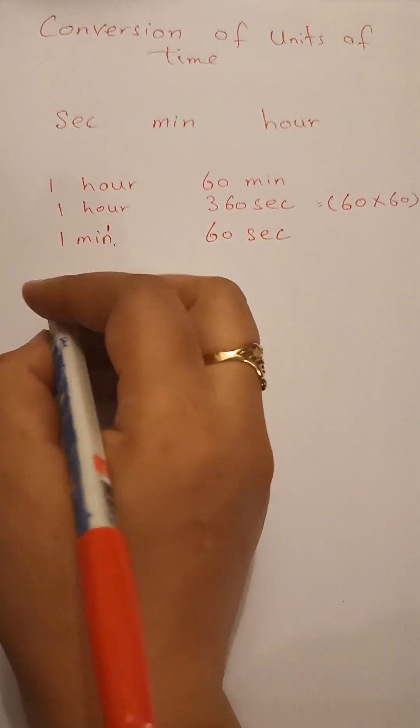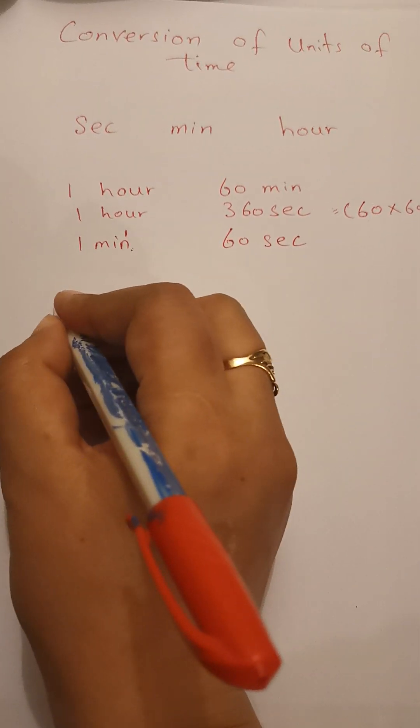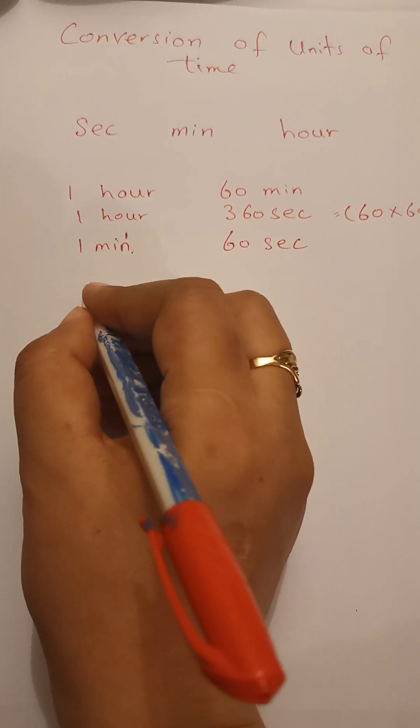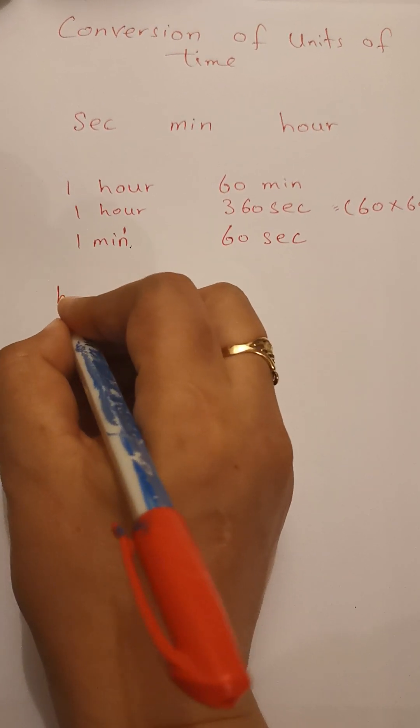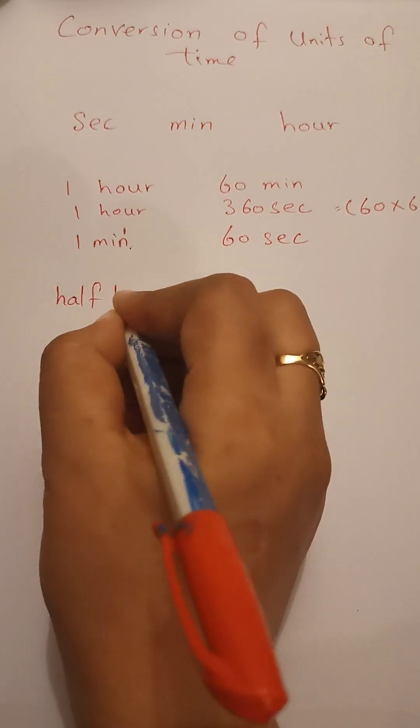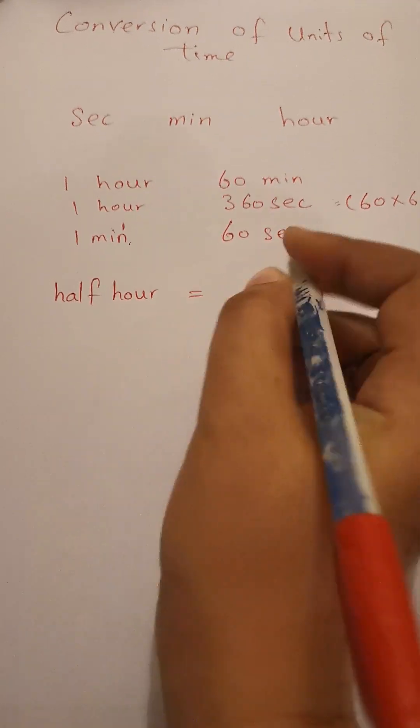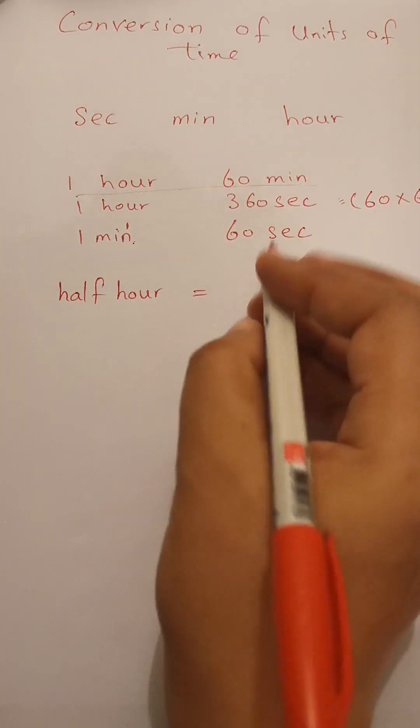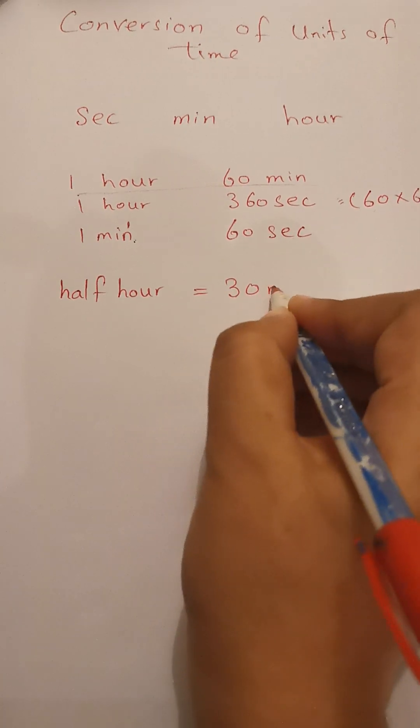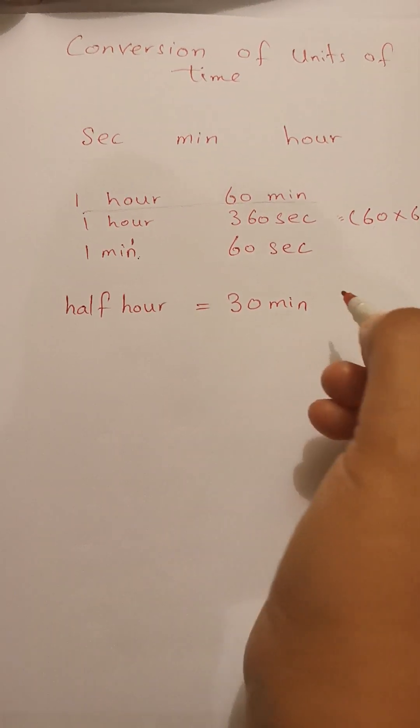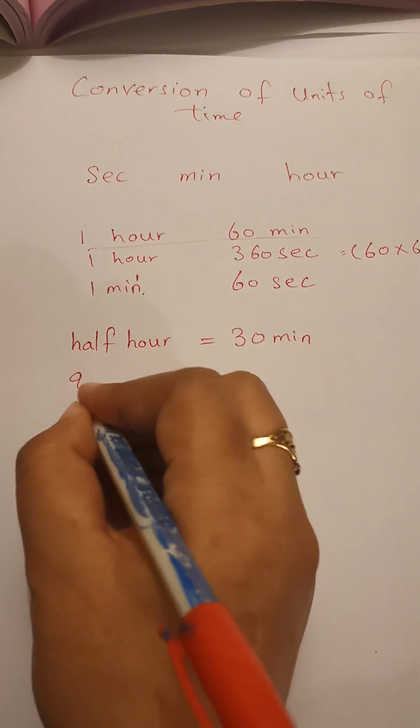So half hour is equal to - what is half of it? 30 minutes. Half hour equals 30 minutes. Quarter means